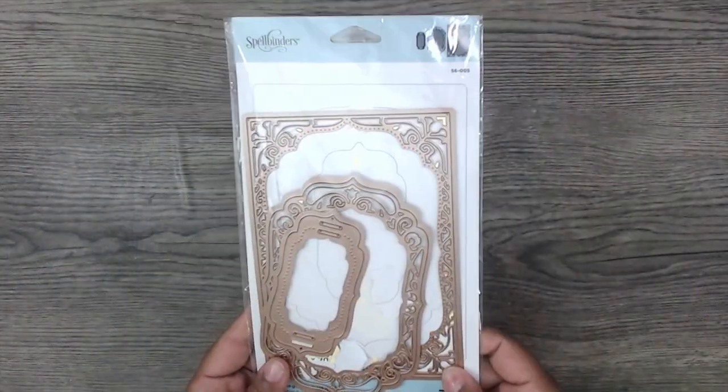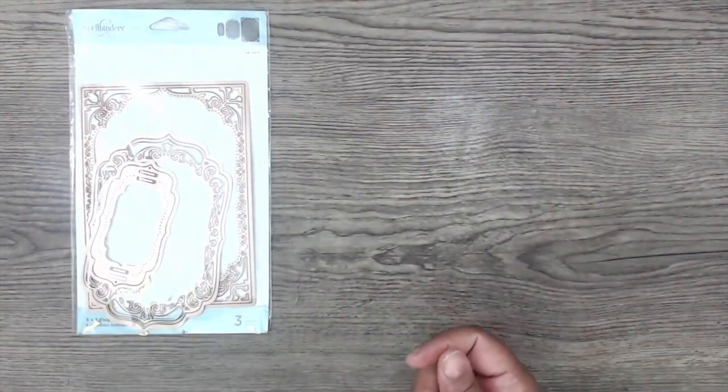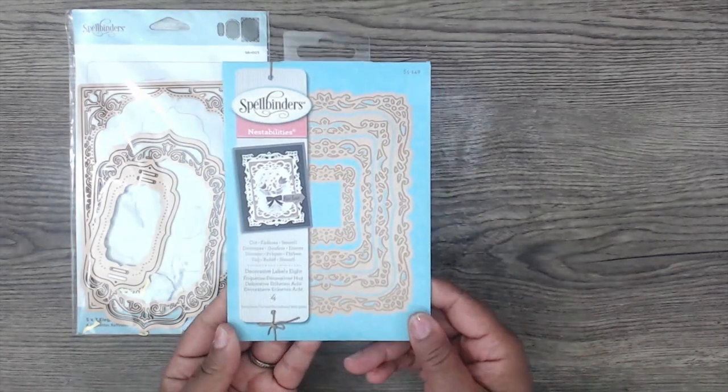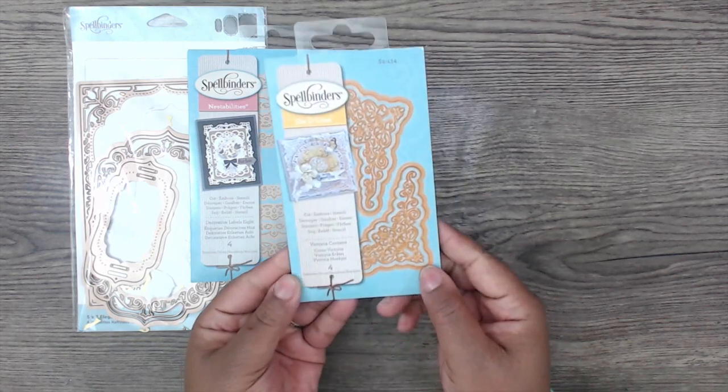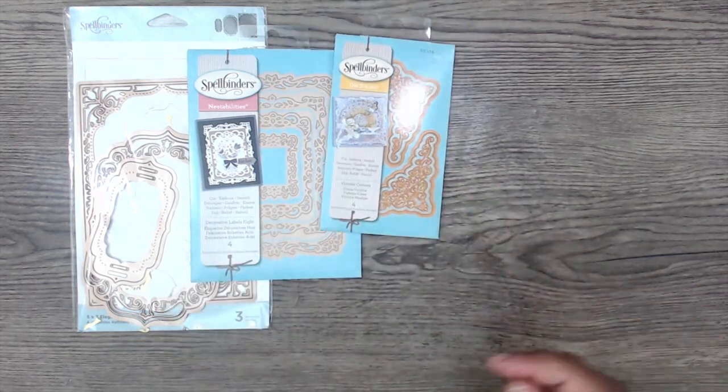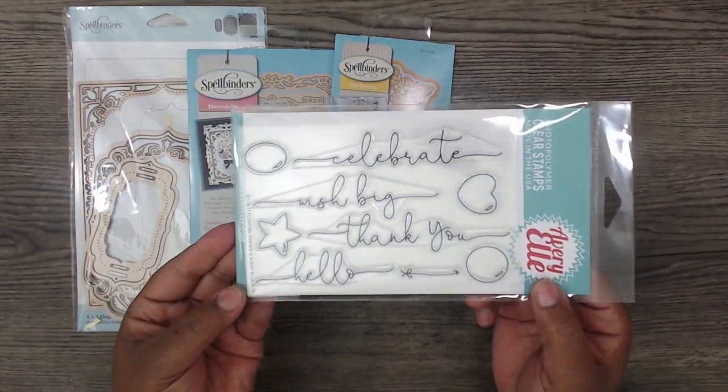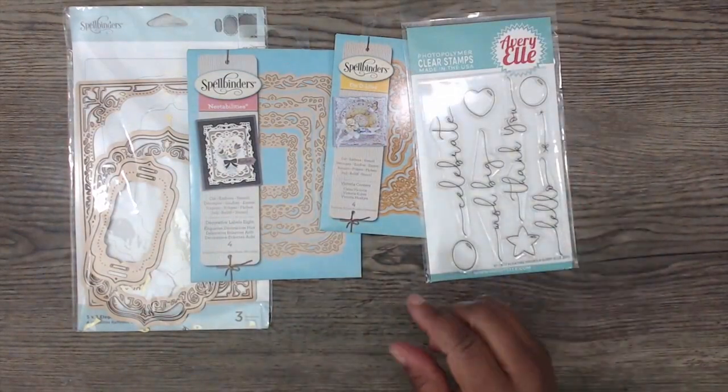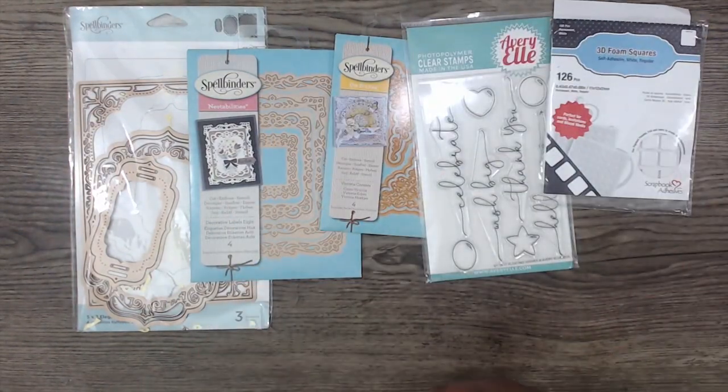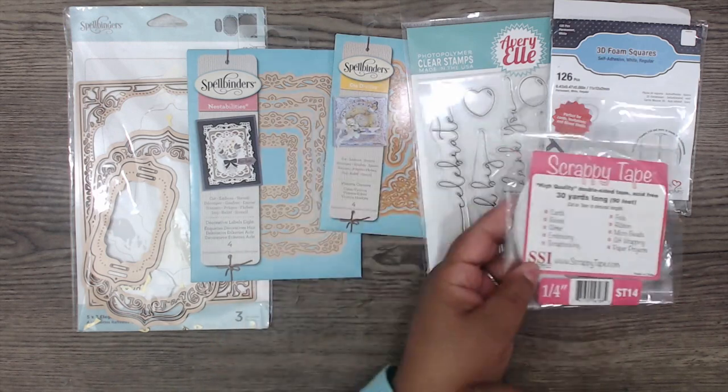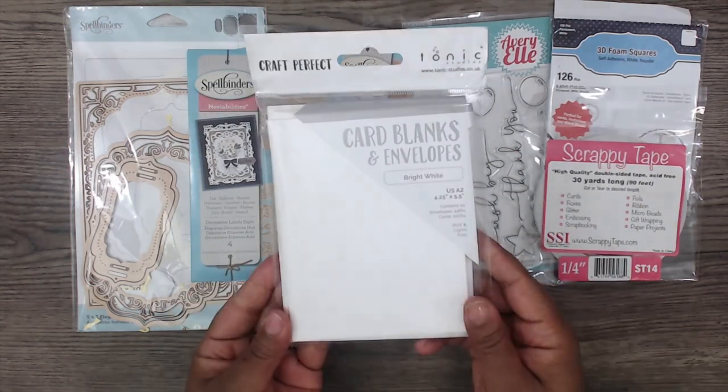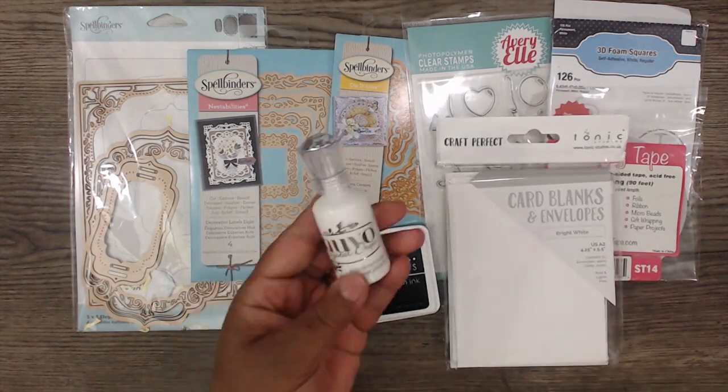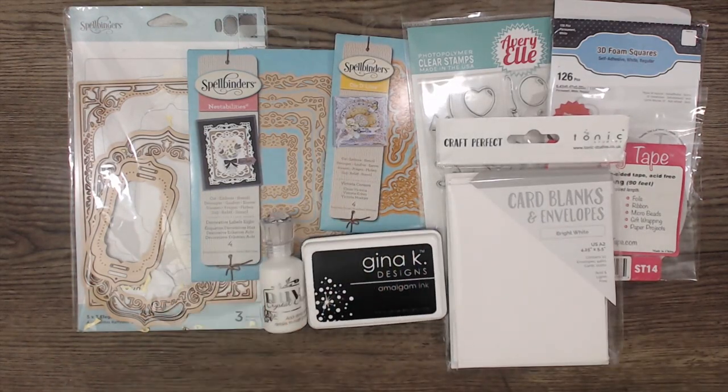So for the first card we're going to use 5x7 Elegant Labels 4, Decorative Labels 8, Spellbinders Delights Victoria Corners, Avery Elle Stamp Set Floating Wishes, 3D Foam Squares, Quarter-Inch Scrappy Tape, Gina K Designs Amalgam Ink, Tonic Studios Card Blank, and Simply White Nouveau Drops.